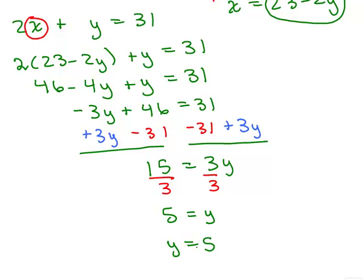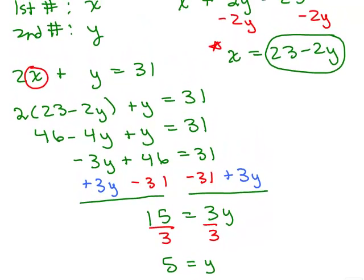Now we've got to remember what y stood for. Remember, it's a word problem or a puzzle. y was the second number, so the second number is 5. We need to find the first number.